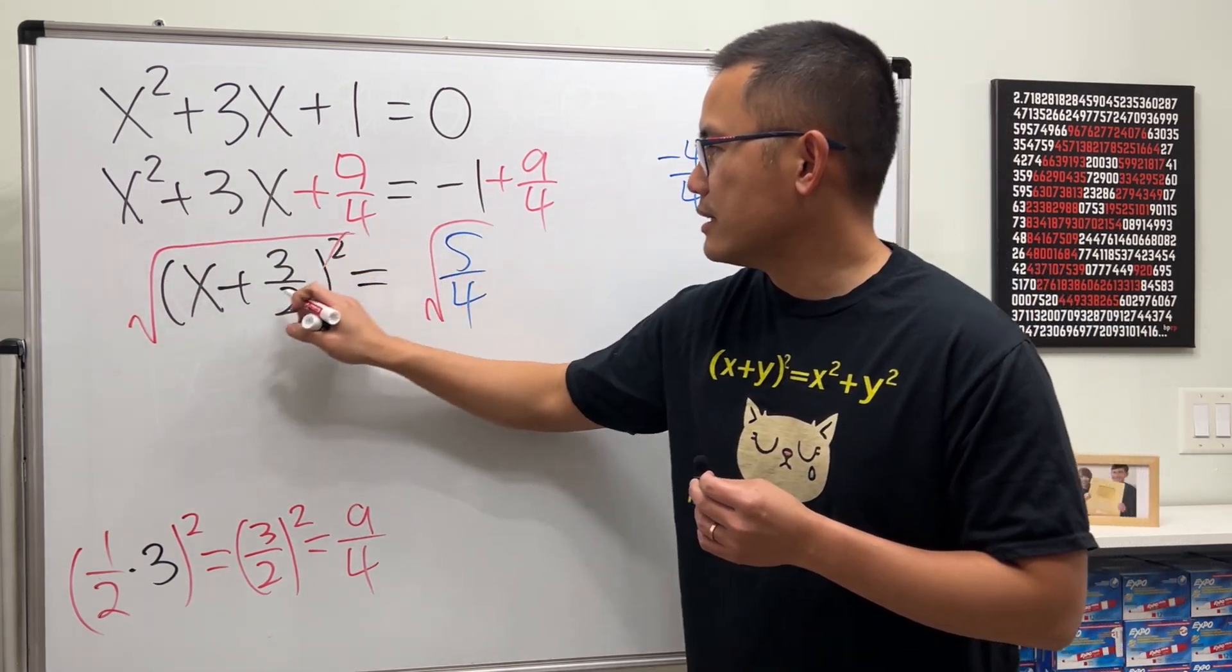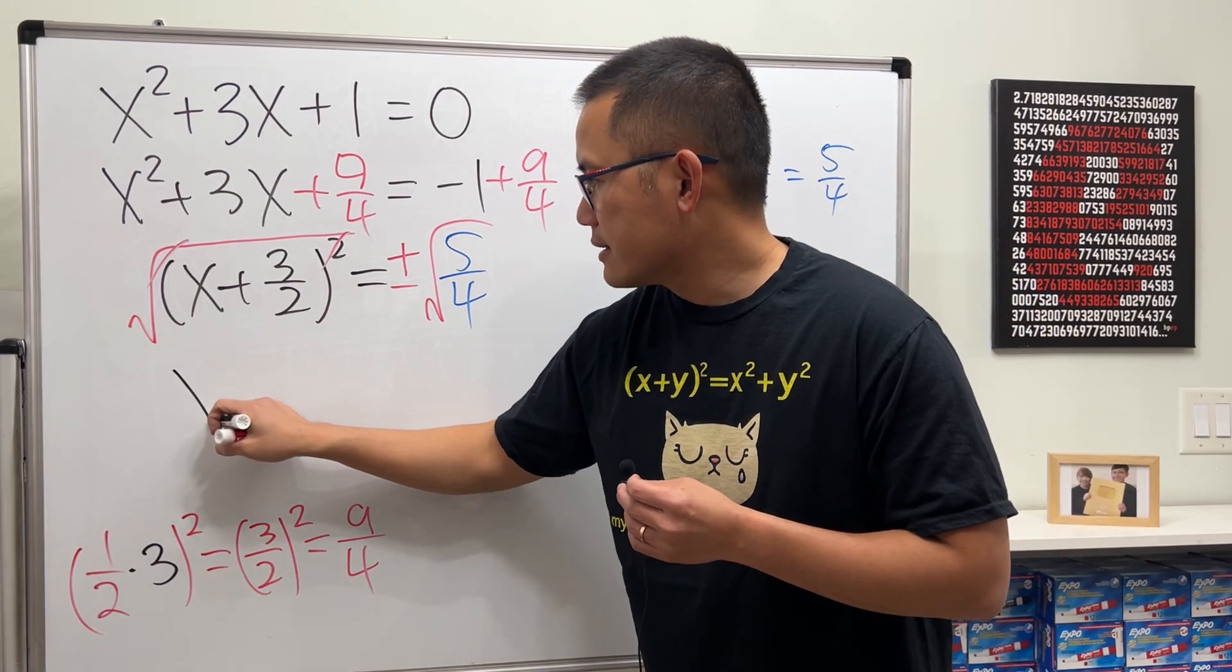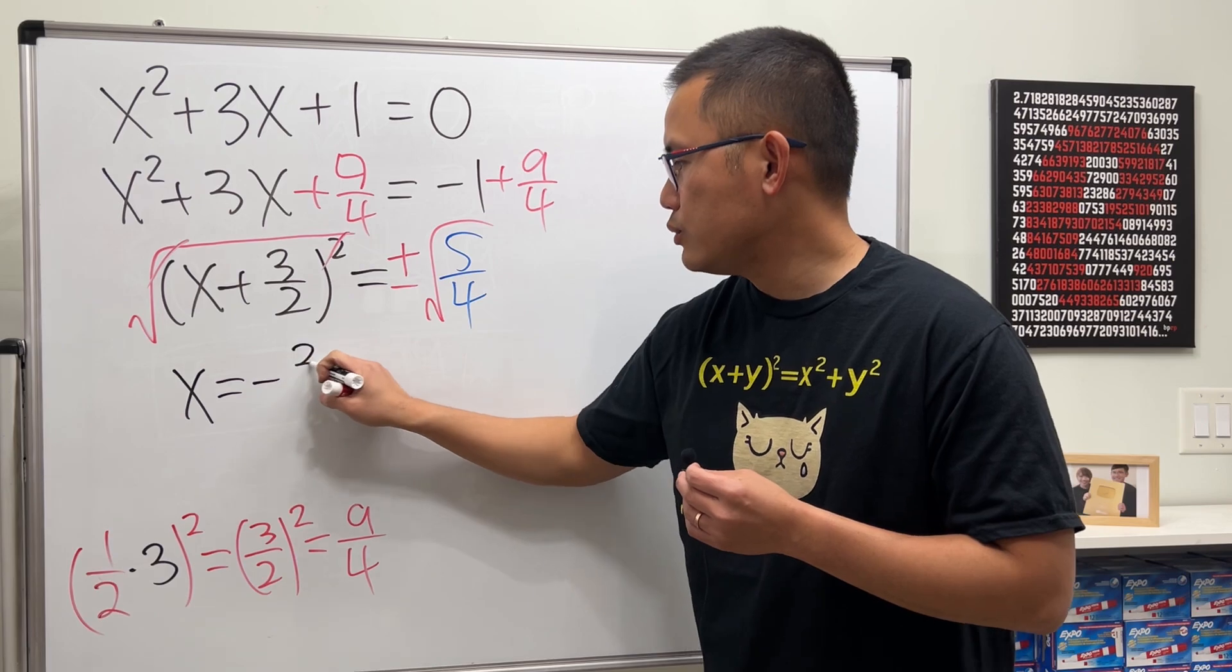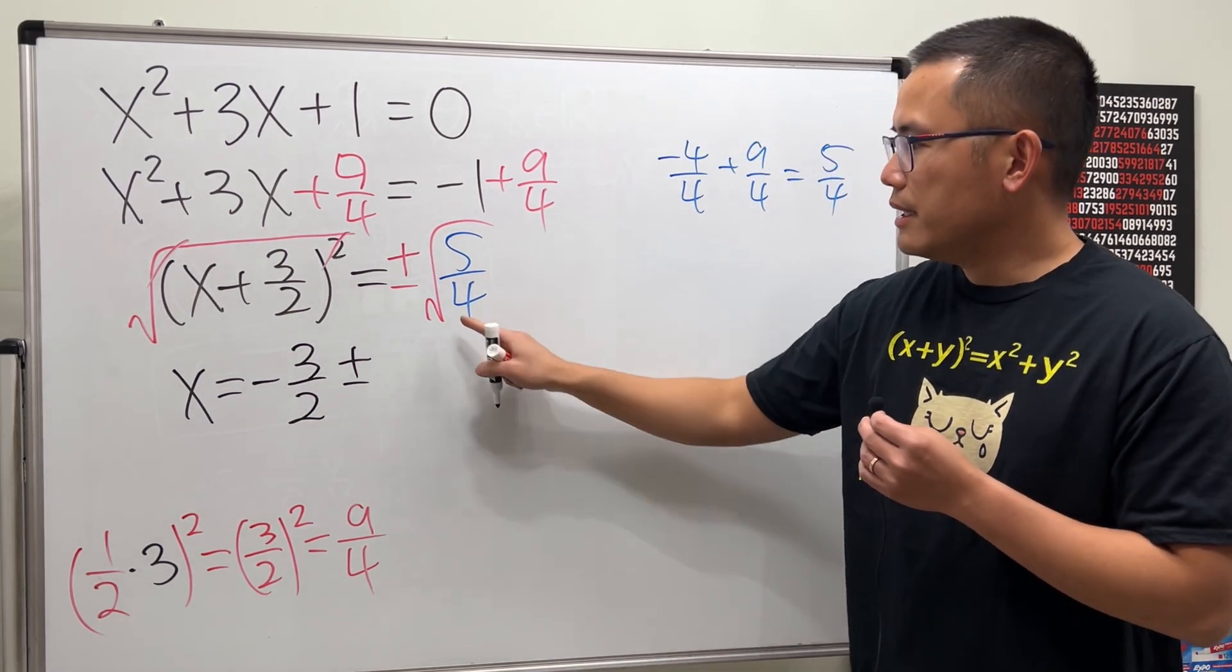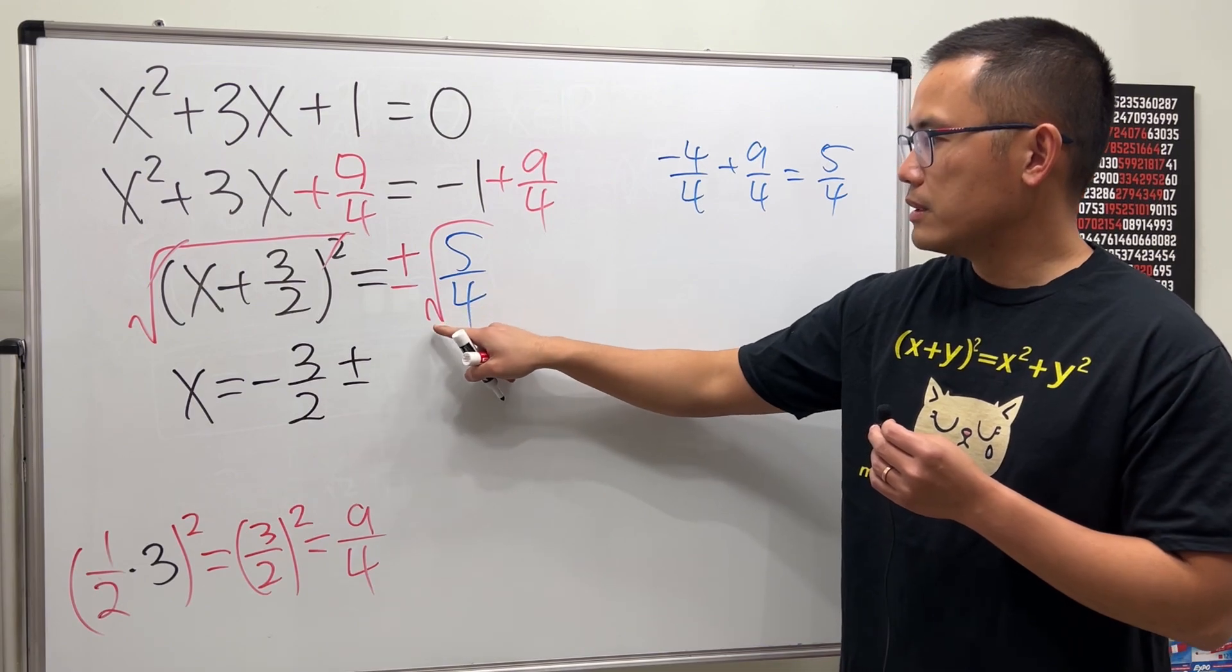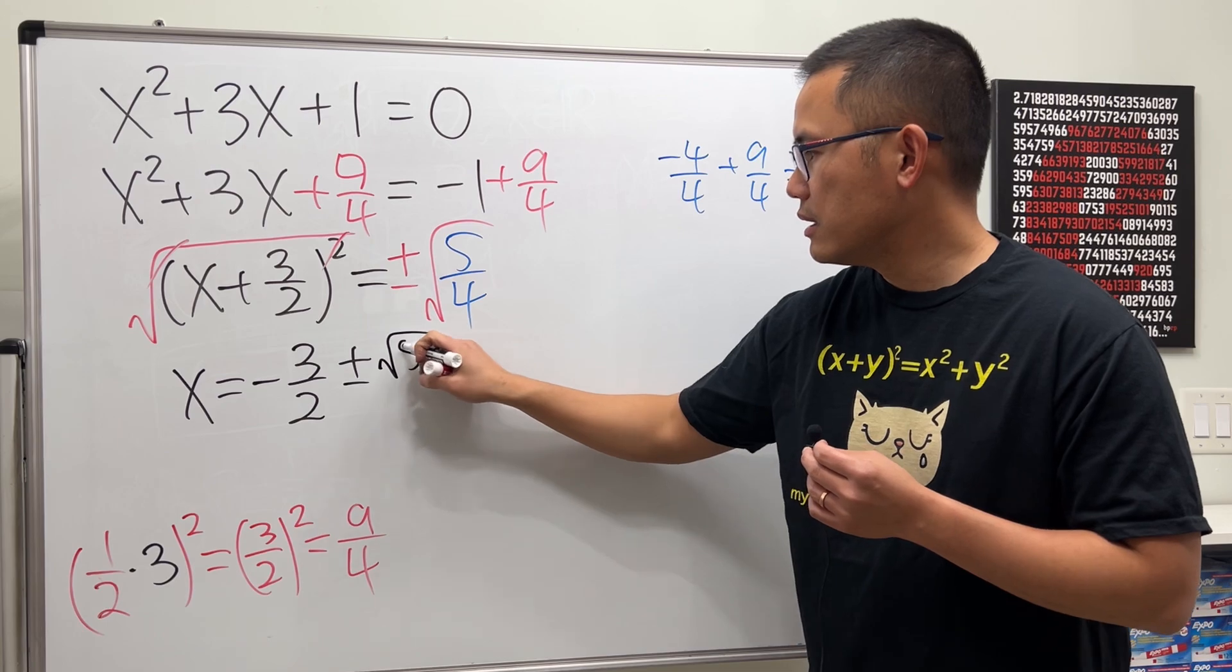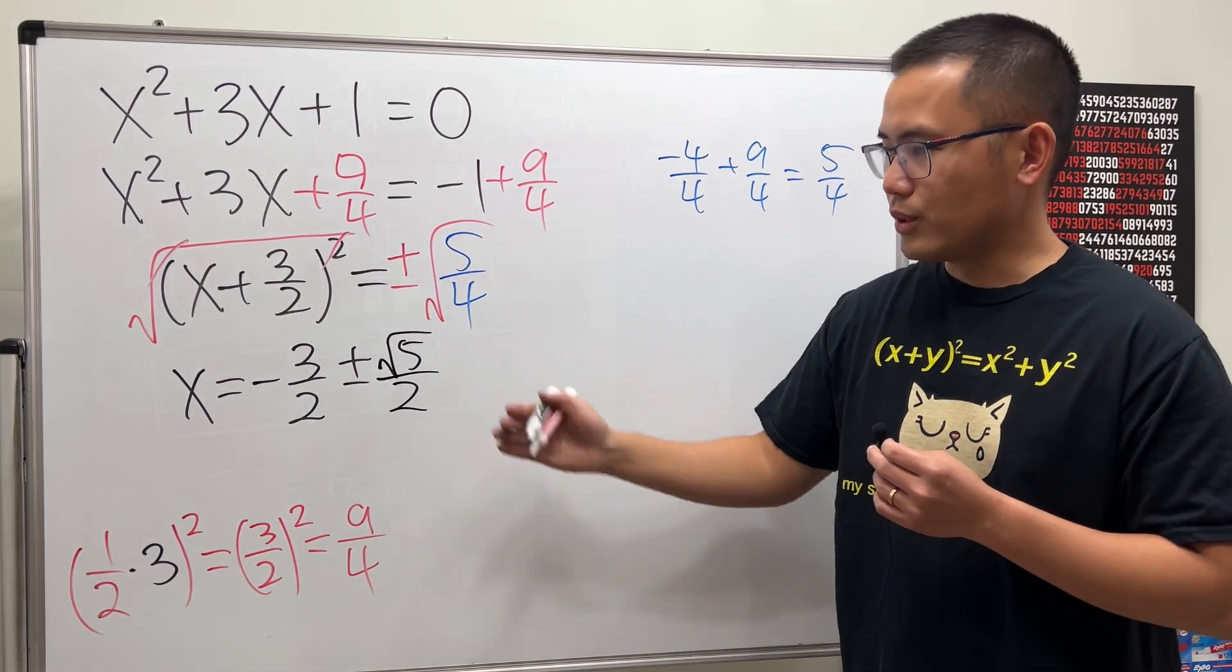Take the square root of both sides, cancel, cancel, and don't forget the plus or minus here. x equals, put this to the other side, we have negative 3/2, and then we have the plus or minus square root of a fraction. Take the square root of 5—well, it's an irrational number, so leave it—but square root of 4 is just a 2 on the bottom.